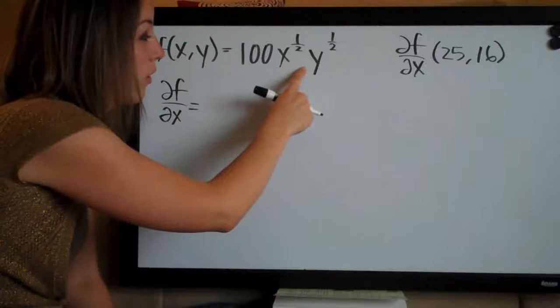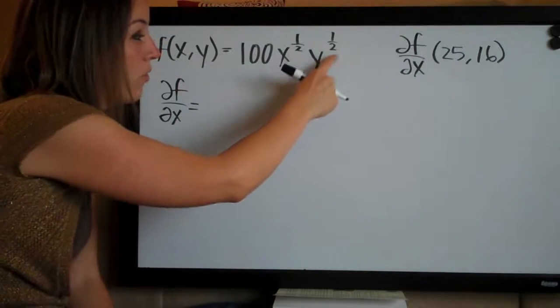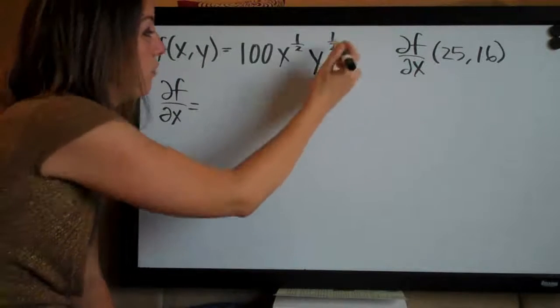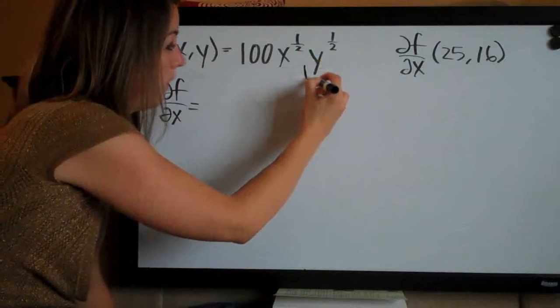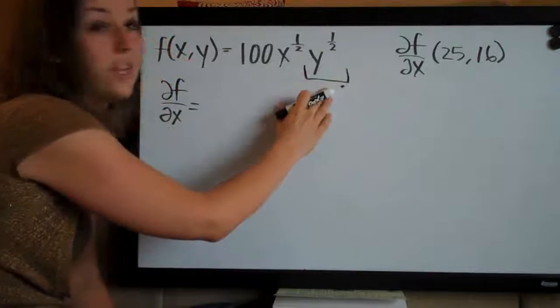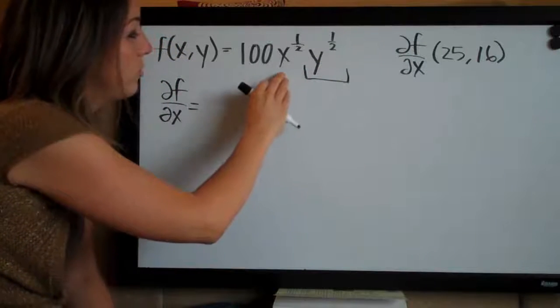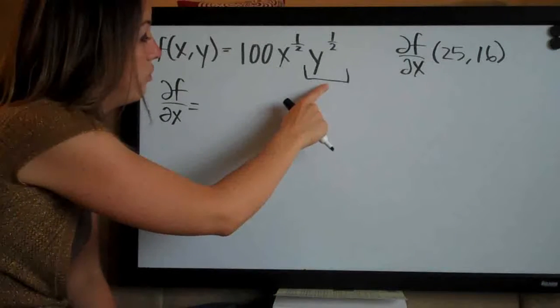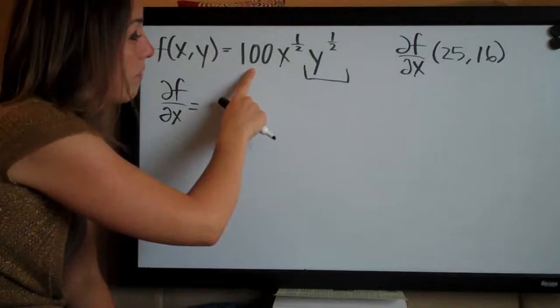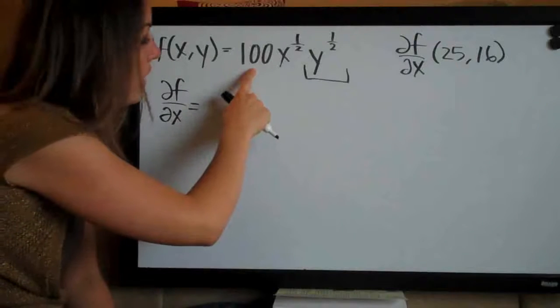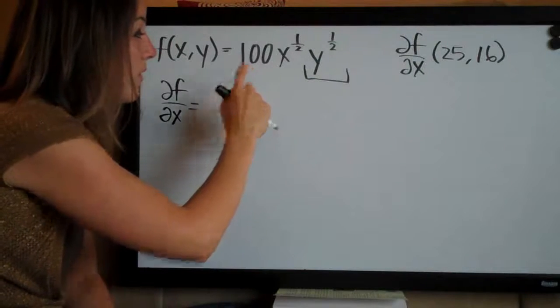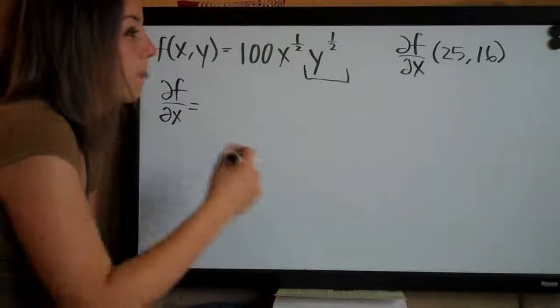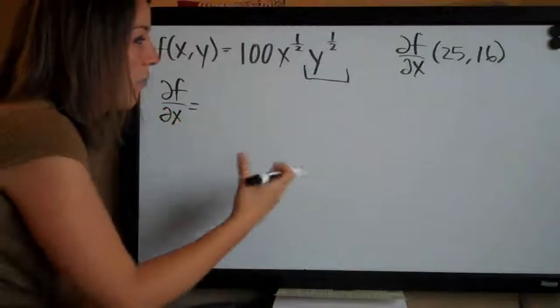So if we plug in four for y, four to the one-half or the square root of four will equal two. So this whole part of the function will be equal to two. If this is equal to two, imagine what's going to happen when we take the partial derivative with respect to x. This two will become part of the coefficient here, one-hundred, and we'll be taking the derivative of two-hundred x to the one-half, which is very easy to do.